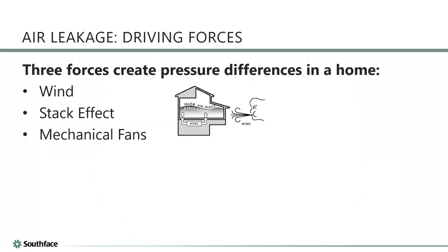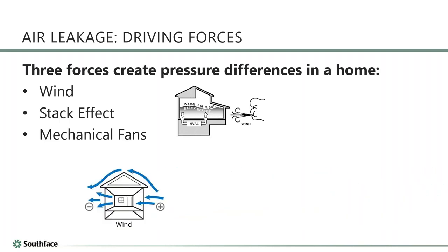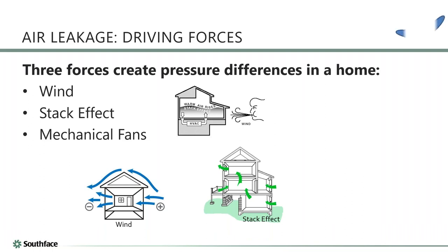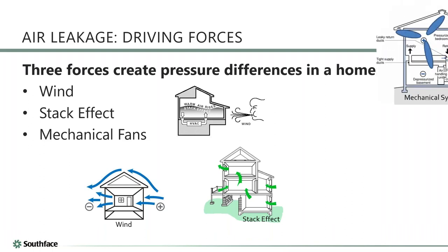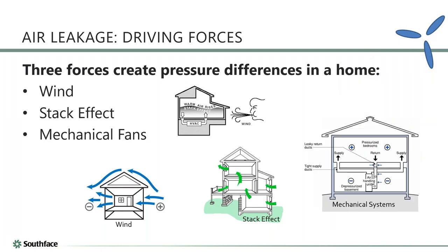There are three things that cause pressure differences in a home. The first is wind. The second is the stack effect — warm air rising. The third is mechanical fans. Wind and stack effect are natural effects; fans are devices we put in. You'll notice we animated these driving forces for this slide — and we definitely blew the budget right there.